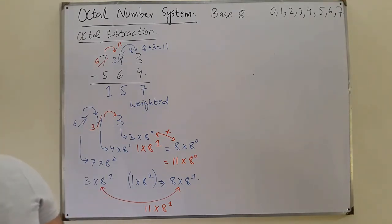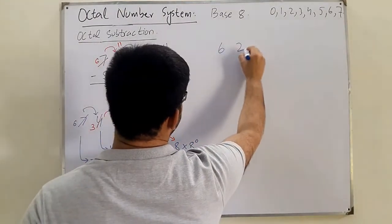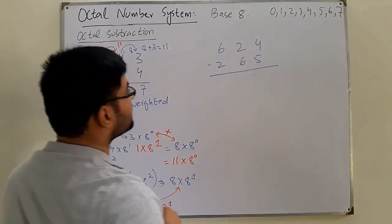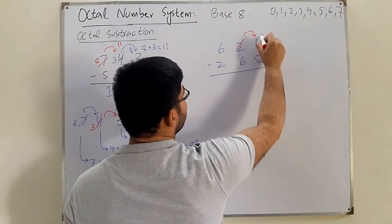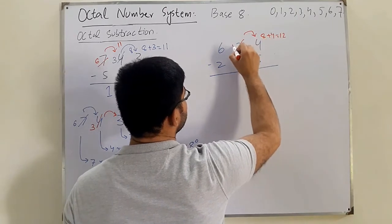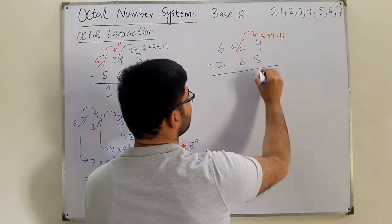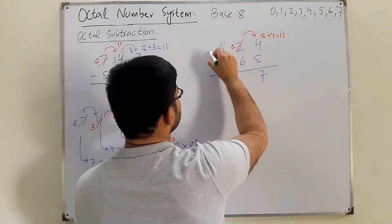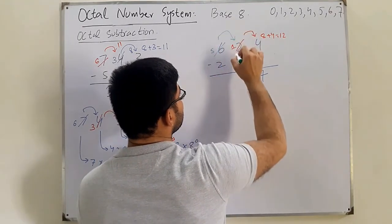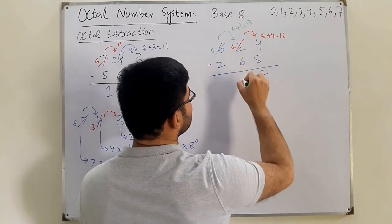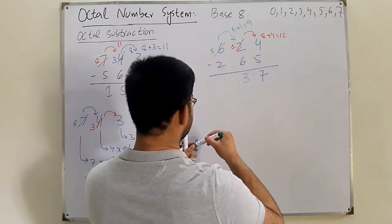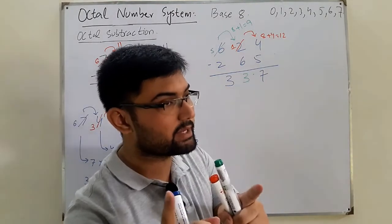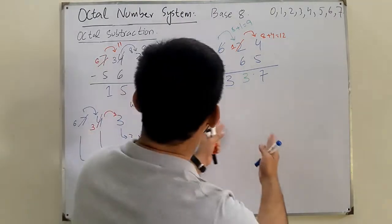Another subtraction example: 624 minus 265. Since 5 cannot be subtracted from 4, we borrow — 8 plus 4 is 12, 12 minus 5 is 7. The next digit becomes 1; since 6 cannot be subtracted from 1, we borrow again — 8 plus 1 is 9, 9 minus 6 is 3. Then 5 minus 2 is 3. The answer is 337. Note: in subtraction, we call it a borrow, not a carry.